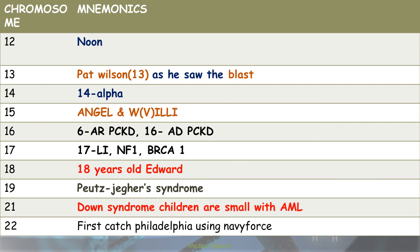Chromosome 17 — Li-Fraumeni syndrome, NF1, and BRCA1. Chromosome 18 — '18-year-old Edward' for Edward syndrome. Chromosome 19 — Peutz-Jeghers syndrome. Chromosome 21 — Down syndrome children are small with AML. Chromosome 22 — 'First catch Philadelphia using Navy force.'